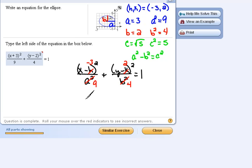Which means when we clean this up, that will be x plus 3 quantity squared over 9 plus y minus 2 quantity squared over 4 will equal 1. And that is the equation of that ellipse.